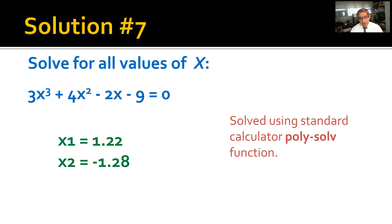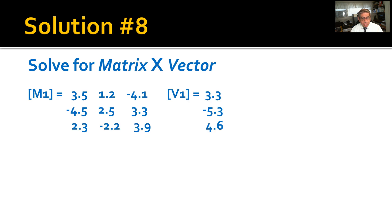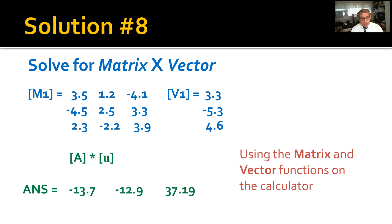Solution number eight: Solve for a matrix times a vector with the two given here. Using the matrix and vector functions on the calculator, it displays as bracketed A times bracketed small u. The answer is a vector as you can see here.